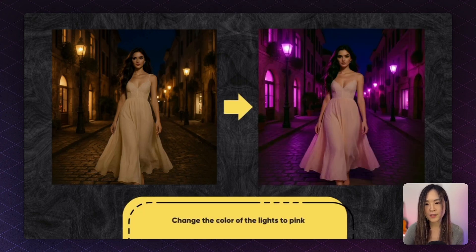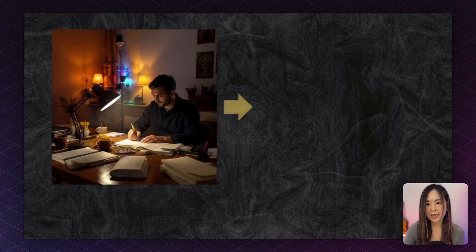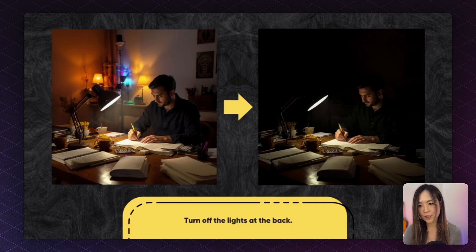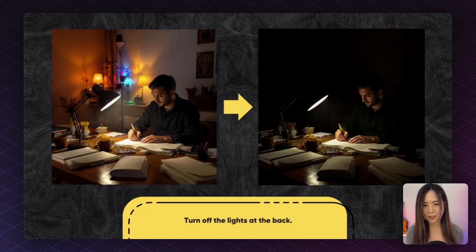We can also change the color of the light and the whole scene gets covered in a different color tone — you simply ask it to change the light color, just like the beginning example. We can also adjust specific lightings: I asked it to turn off the lights at the back and it gave me a nearly pitch-dark room while keeping the front light on. It really makes me feel like an image god.